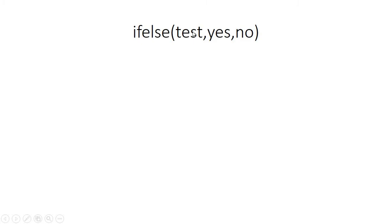The last type is a single command ifelse, in which we give a condition. If this condition is true then the expressions given in the yes place will be executed. And in case this condition is false then the expressions given in the place of no will be executed. So if the test is true the yes expressions will be executed, and if the condition is false then the no expressions will be executed.